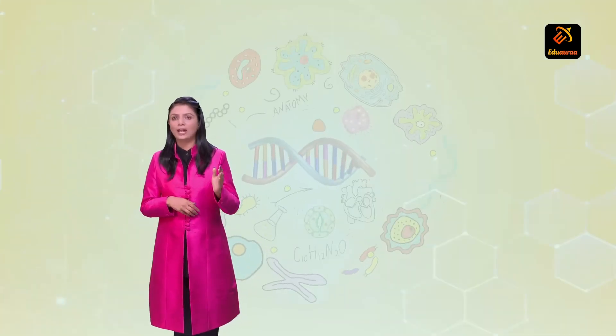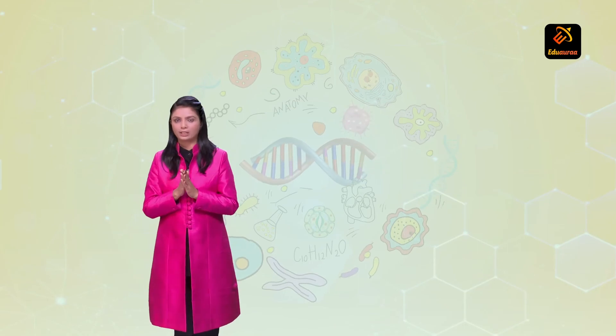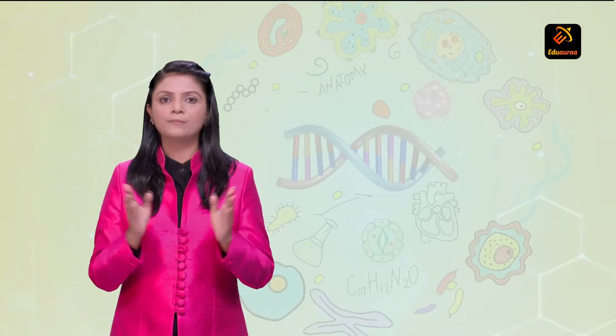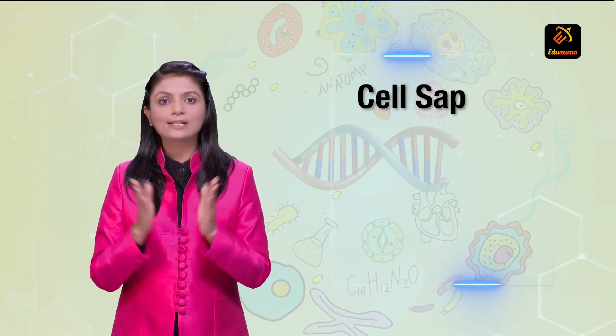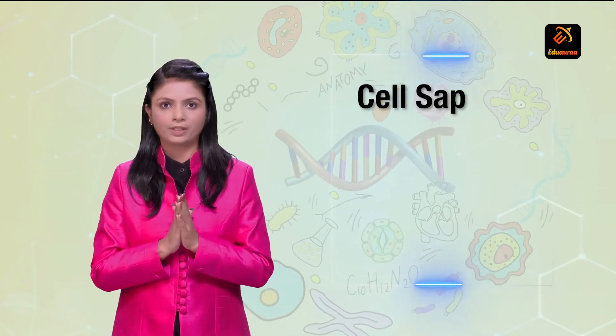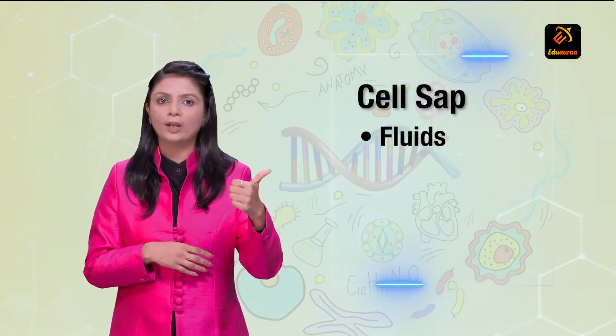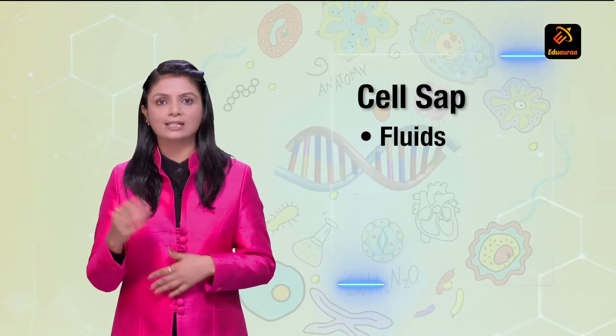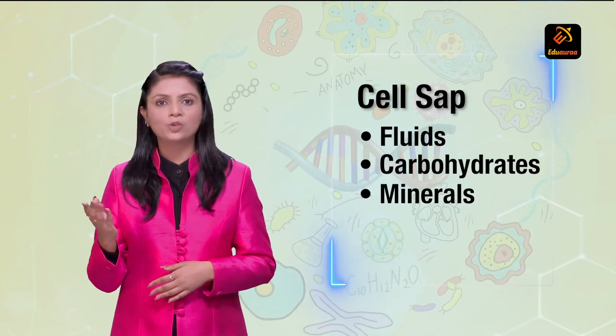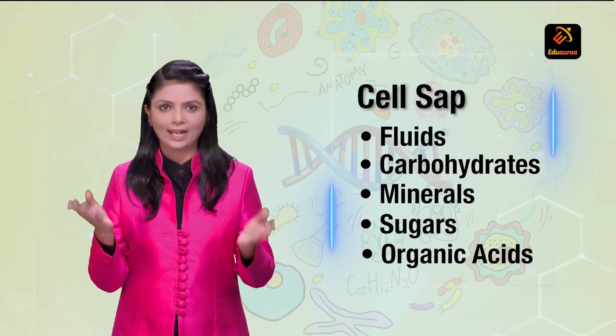These vacuoles which are there have a membrane surrounding it and are responsible for storing cell sap. What is the cell sap made up of? It comprises of fluid and substances like carbohydrates, minerals, sugars and organic acids.